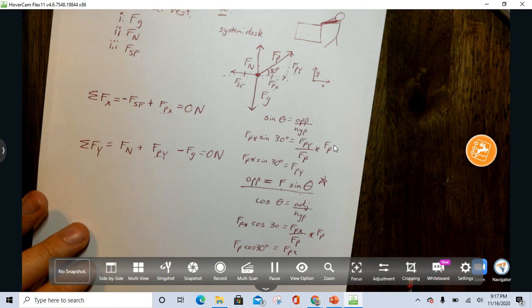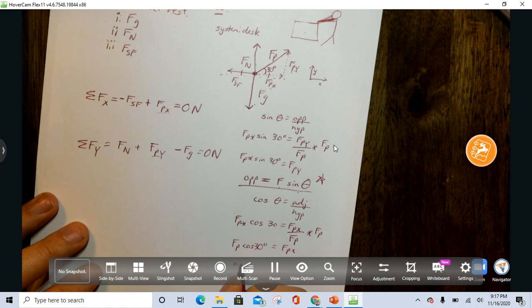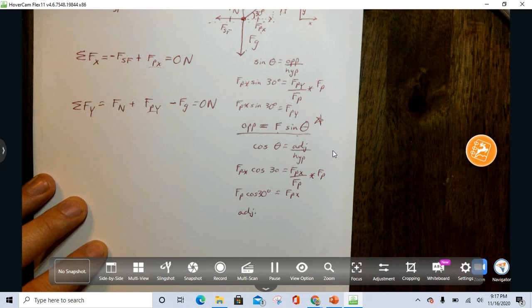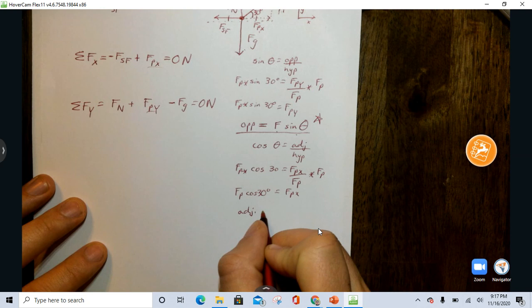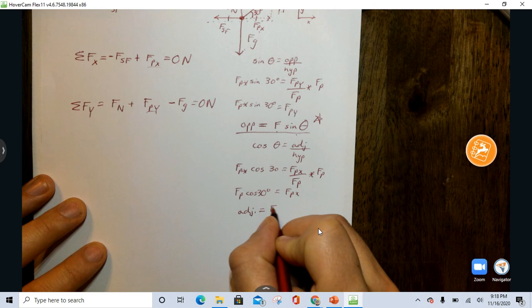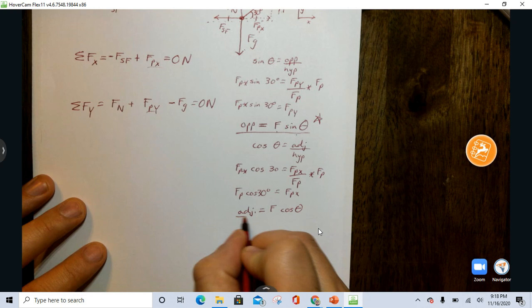And we can replace FPX with these things. Again, I'm going to generalize a little bit. If you have the adjacent side of the angle that you're looking for, that's going to equal the force times cosine of the angle. Good thing worth memorizing.